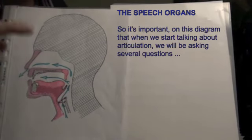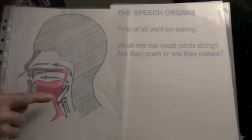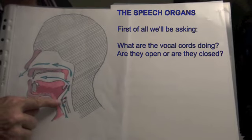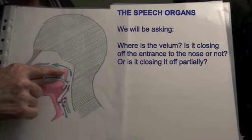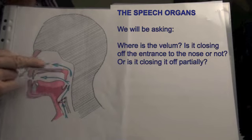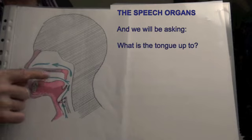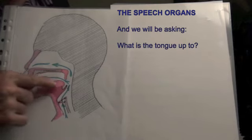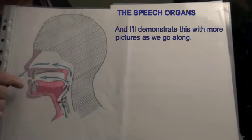It's important that when we start talking about articulation, we will be asking several questions. First of all, we'll be asking: what are the vocal cords doing — are they open or are they closed? We will be asking: where is the velum — is it closing off the entrance to the nose, or not, or partially? And we will be asking: what is the tongue up to? I'll demonstrate this with more pictures as we go along.